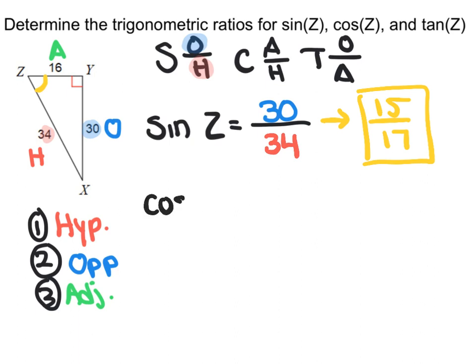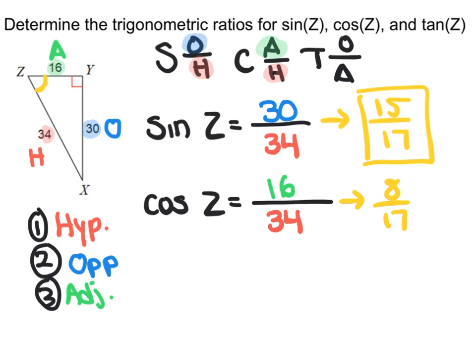For cosine of Z, we have our adjacent on the top, and the adjacent is 16. So I have 16 over the hypotenuse on the bottom, which is 34. So I have 16 over 34, which now if I go to simplify, would give us 8 over 17.